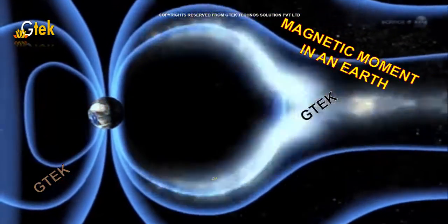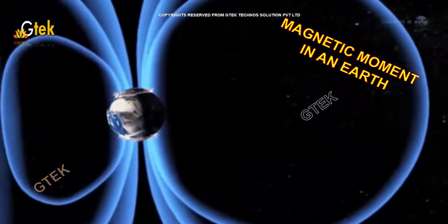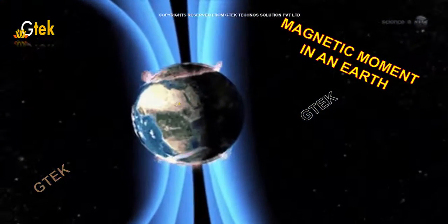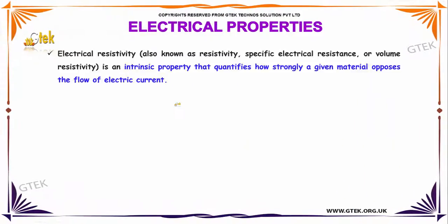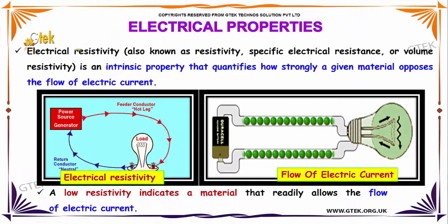Let's see this magnetic moment in an Earth surface. Let's move on. Electrical resistivity is also known as resistivity, specific electrical resistance, or volume resistivity.